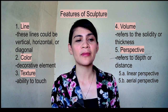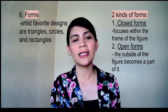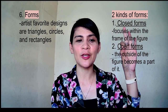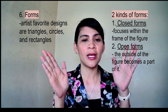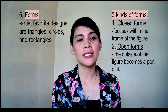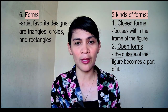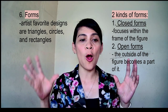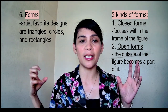We also have form. Artists in sculpture favor designs such as triangles, circles, and rectangles. There are two kinds of forms: closed form and open form. The closed form shows the elements of art contained within the frame, which focuses the eye on the picture. The open form extends the viewing outside the piece of art — the outside becomes a part of it.